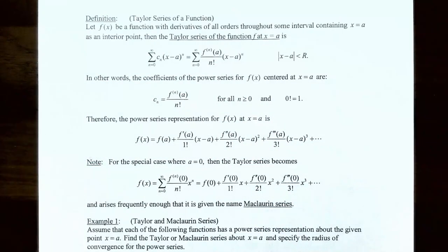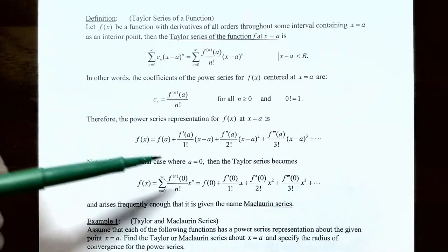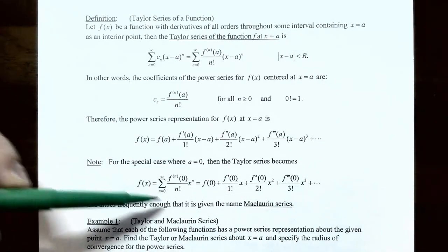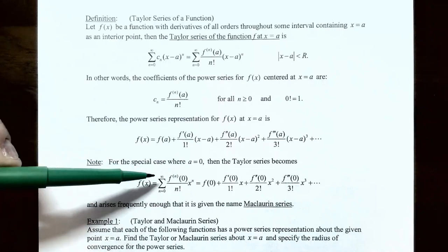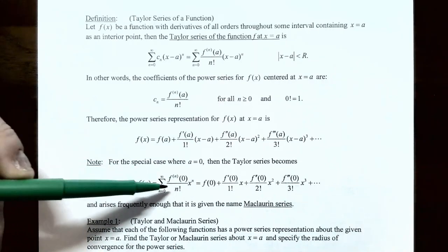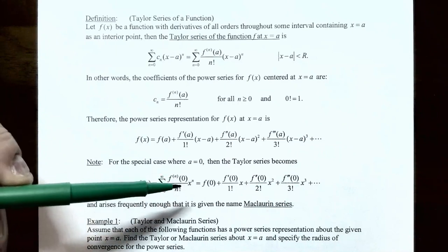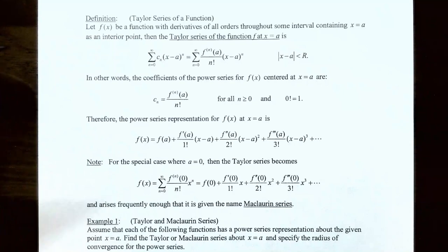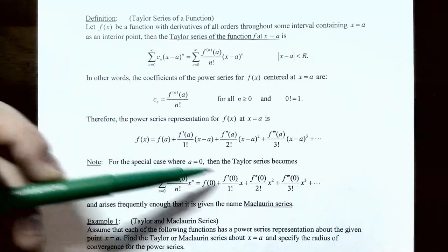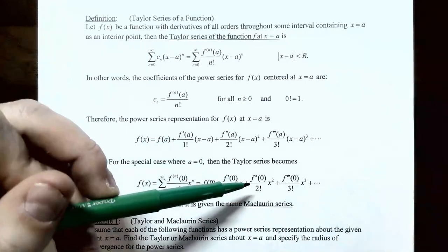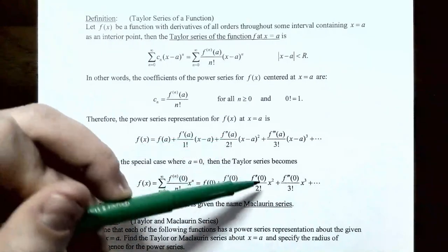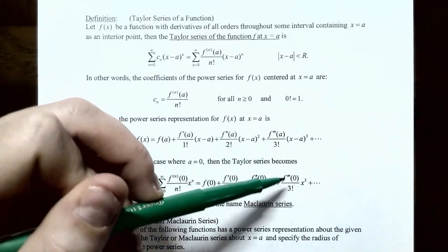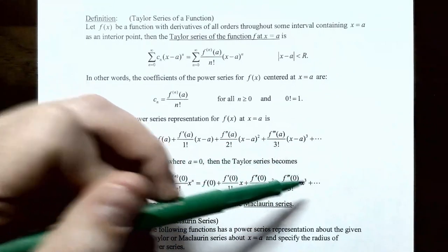Written out explicitly, f(x) equals f(a) plus f'(a)·(x-a)/1! plus f''(a)·(x-a)²/2! plus f'''(a)·(x-a)³/3! and so on as an infinite polynomial. In the special case where a=0, this becomes f(x) equals f(0) plus f'(0)·x/1! plus f''(0)·x²/2! plus f'''(0)·x³/3! and so on.